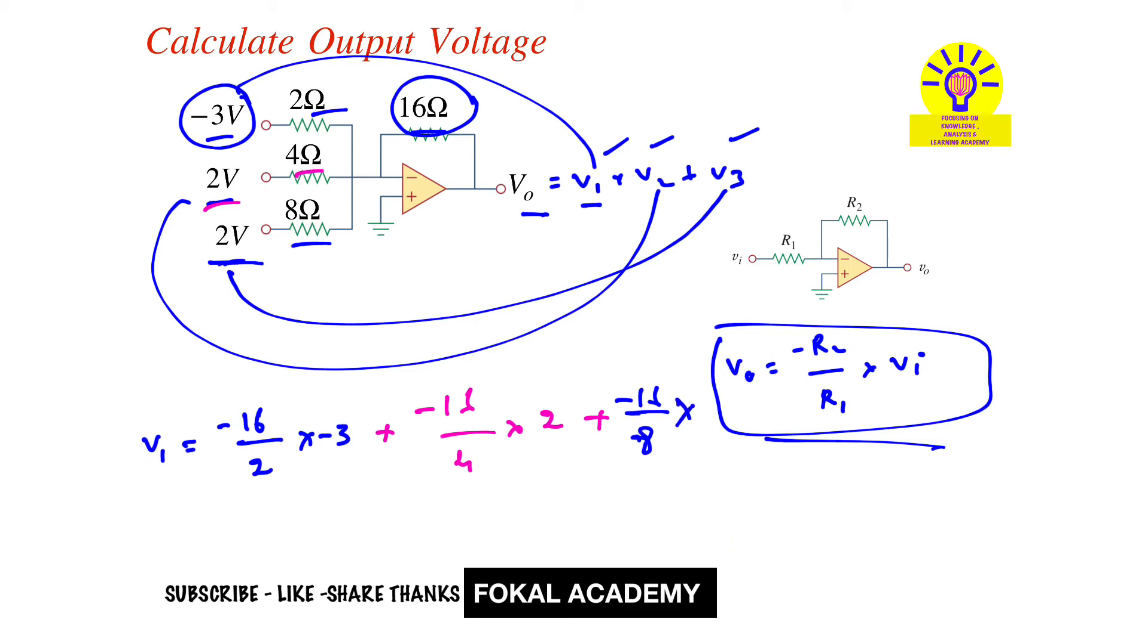Now simplify this. Minus minus becomes plus, so 8 times 3 is 24, plus 4 into 2 is minus 8, and 2 into 2 is minus 4. So 24 minus 12 equals 12 volts, and this is the output voltage for the given op-amp circuit.